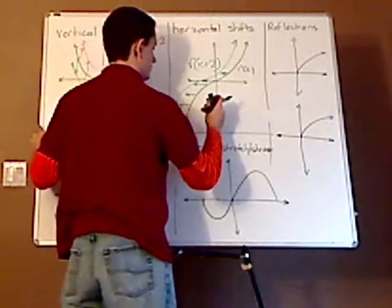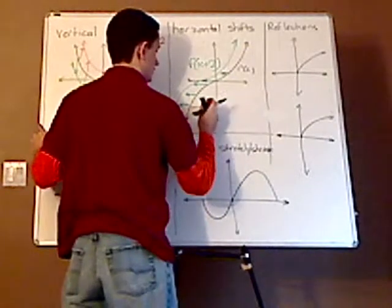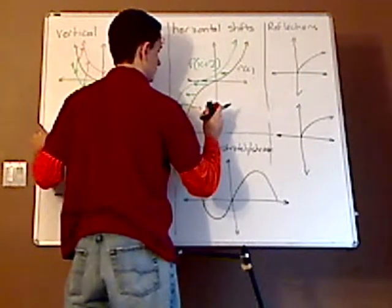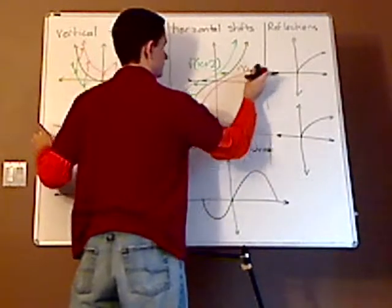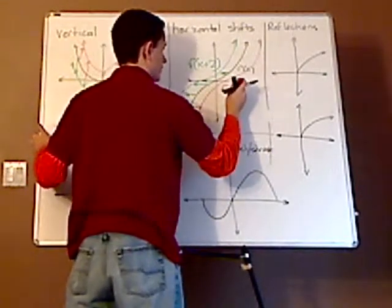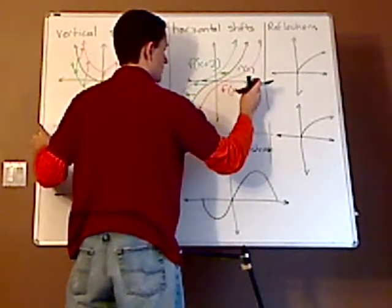Now, if I do the other direction, shift it over right one unit, that would be f of x minus 1.